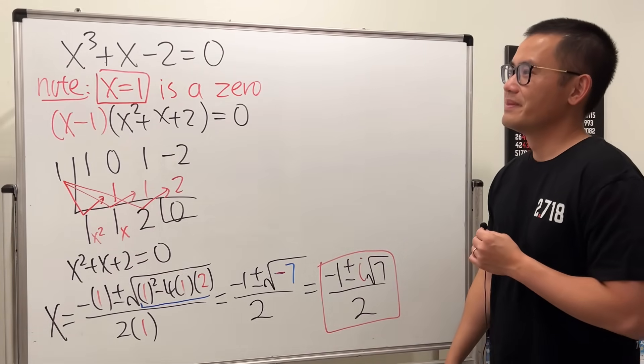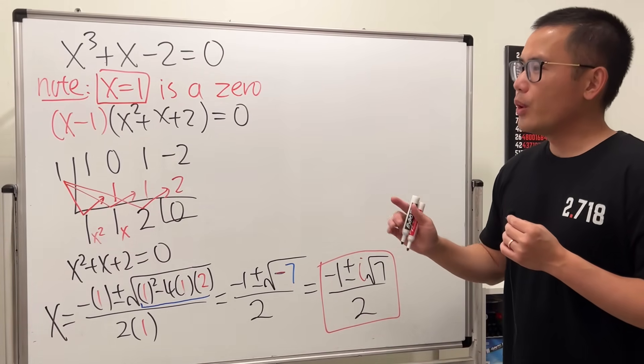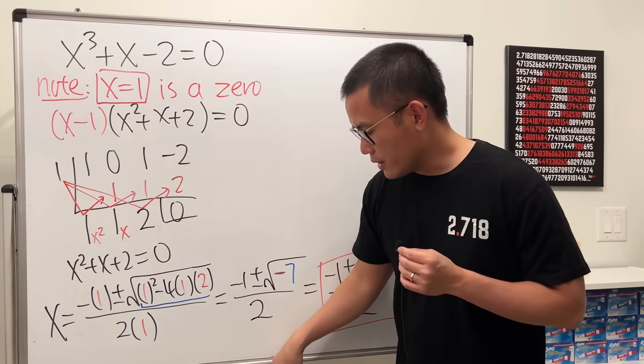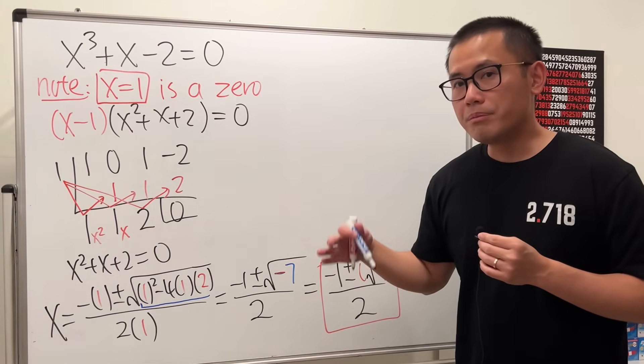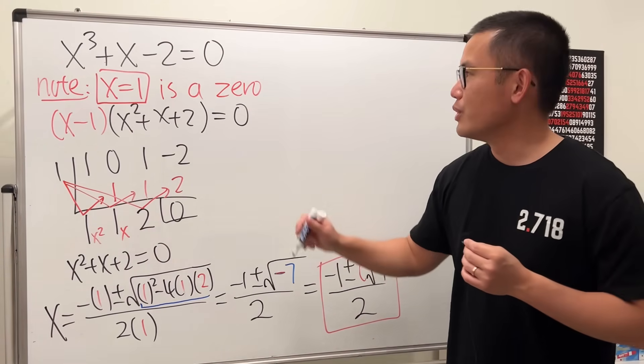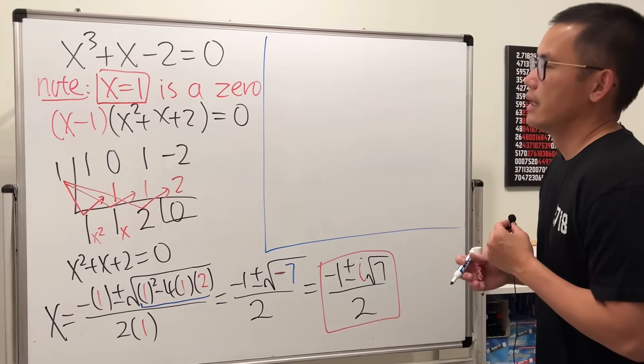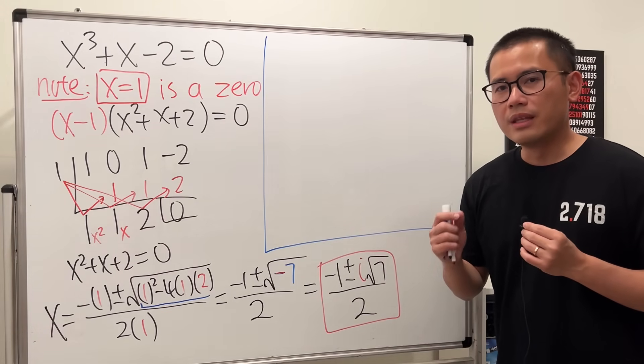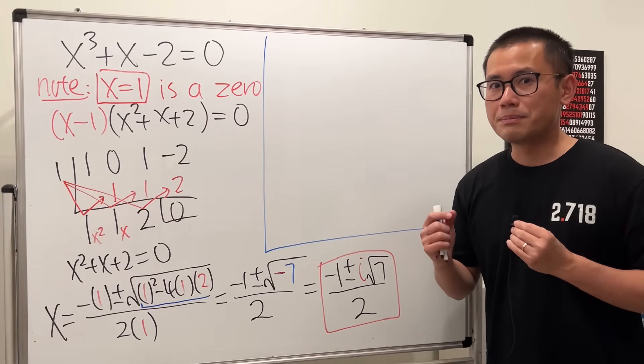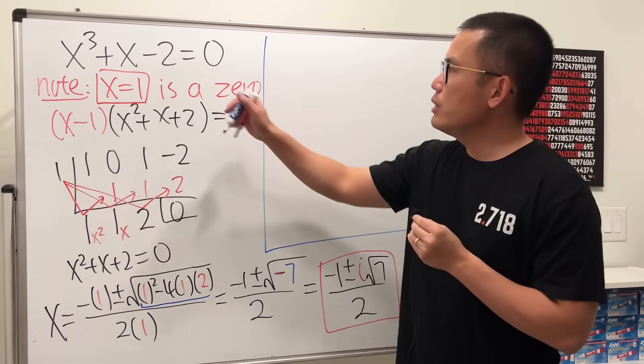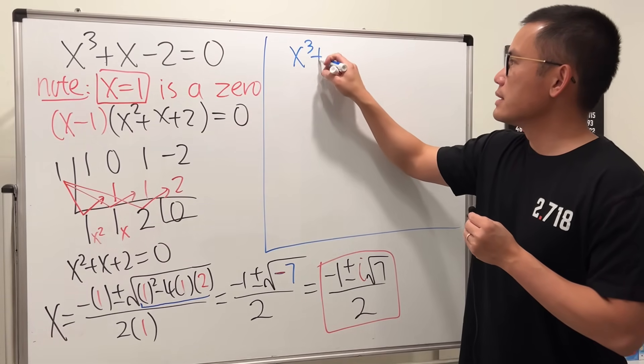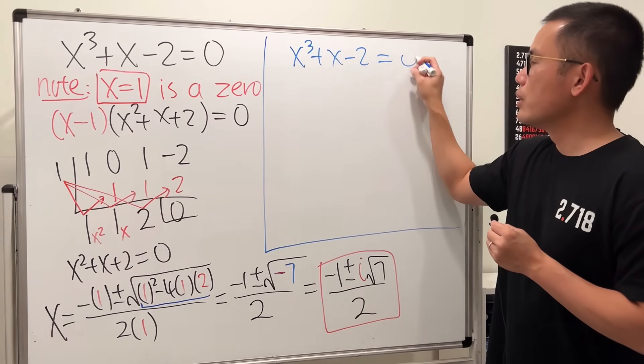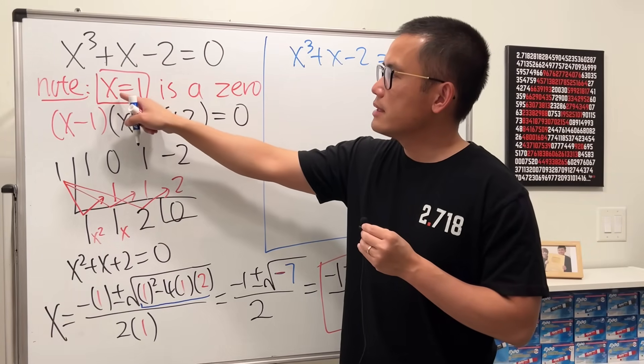So that's it. Now for the people who don't like to do the synthetic division so much, they can possibly try this. Let me show you. Whenever you're trying to solve a polynomial equation, the best way for you to do so is by factoring. So if you have x cubed plus x minus 2 equals 0, and since you know x equals 1 is going to be an answer for this, then you can do the following.